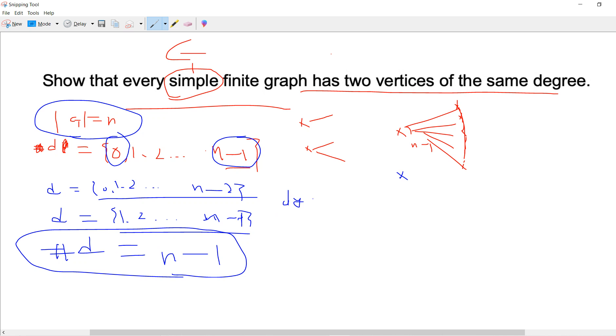So by the pigeonhole principle, I should say by the pigeonhole principle, at least one box, or one container, has n divided by n minus 1, and the ceiling.